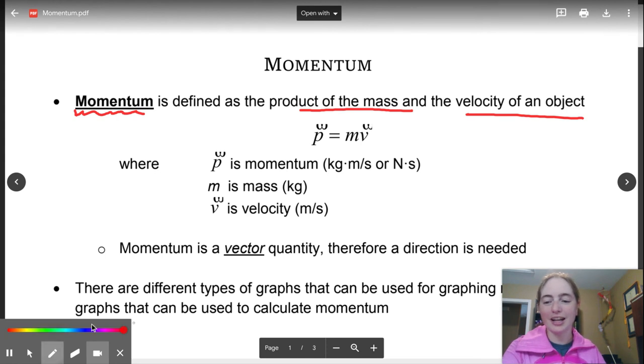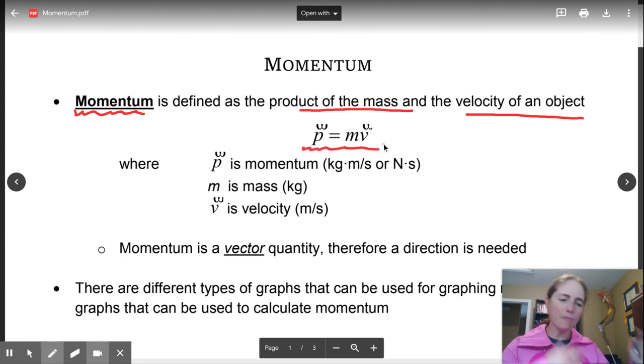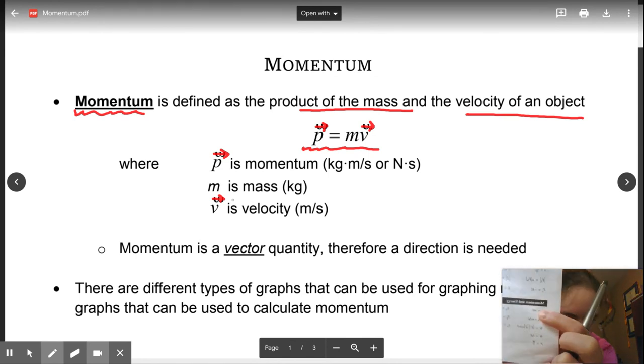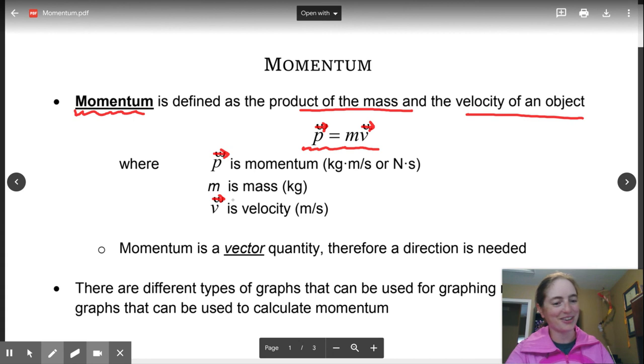So ladies and gentlemen, your equation that is going to be the basis for this unit is P equals MV. Now I beg pardon about these wonky Ws. I'm trying to get from a Word document to a PDF. It swapped out my lovely vector arrows for these weird wonky Ws. So please, I'm just going to replace those with vector arrows. And you can find this equation on your lovely data sheet.